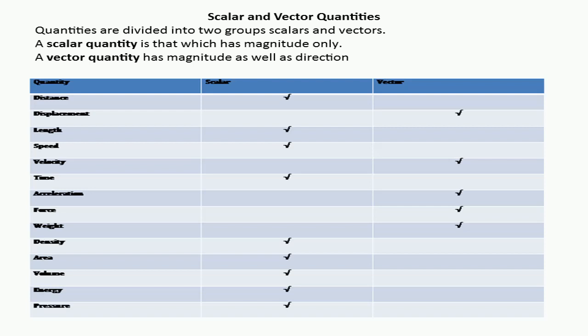Scalar quantities are those quantities which require magnitude only for their representation. We can say that a scalar quantity is that which has magnitude only. For example, if a person goes to a shopkeeper, he says give me 5 kg of sugar, where kg is a unit of mass and 5 is the magnitude.